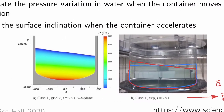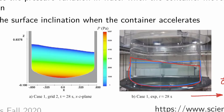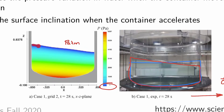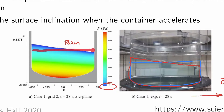Looking at the simulation on the left-hand side, the pressure is normalized with respect to atmospheric pressure, meaning all values are divided by the atmospheric pressure, so atmospheric pressure equals 1. This gives us an idea of how pressure is distributed. The surface is at atmospheric pressure, but now the surface is inclined. As we go down, the pressure increases, and unlike the static case where pressure lines were horizontal, they now appear inclined.